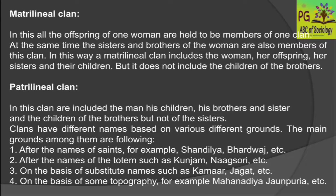Clans have different names based on various grounds. The main ones are: names after saints — for example, Shantilya and Bharadwaj; names based on the totem — such as Kunjam and Nag Sori; substitute names such as Kamar or Jagat; and names based on topography — such as Mahanadia and Johnporia.